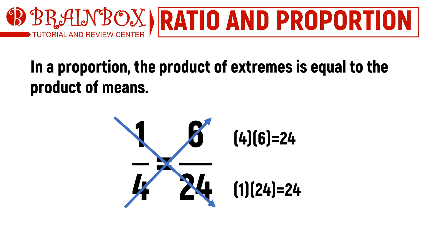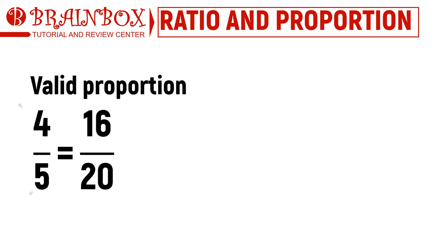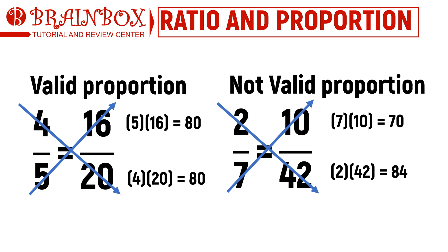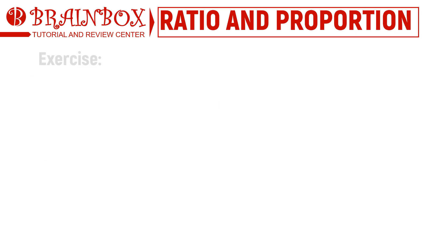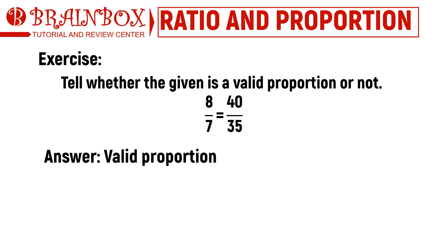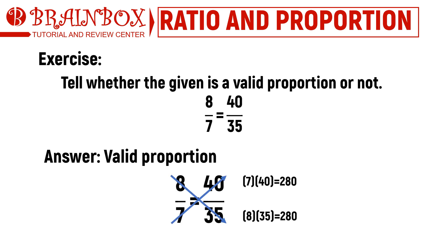Using this property, we can say that the proportion 4/5 = 16/20 is valid, while 2/7 = 10/42 is not. Now, tell whether 8/7 = 40/35 is a valid proportion or not. If you answered valid proportion, then you are right — the product of 8 and 35 is 280, and the product of 7 and 40 is also 280.